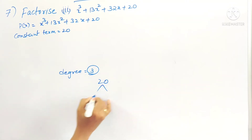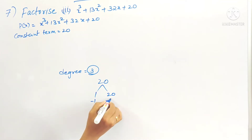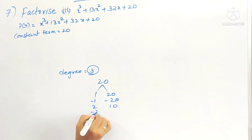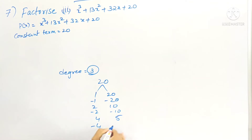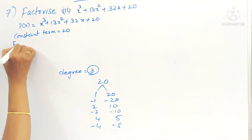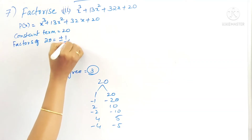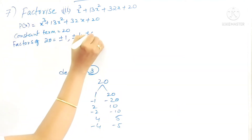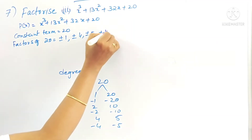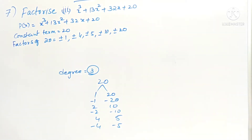The factors of 20 are: 1 and 20, minus 1 and minus 20; 2 and 10, minus 2 and minus 10; 4 and 5, minus 4 and minus 5. So all the factors of 20 are ±1, ±2, ±4, ±5, ±10, and ±20.